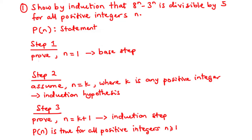Let's try this induction problem. Show by induction that 8^n minus 3^n is divisible by 5 for all positive integers n.